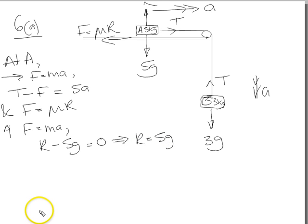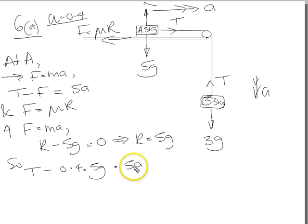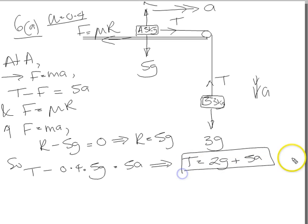Now we know mu from the question, the coefficient of friction, the value of mu is 0.4. So f equals mu r, and r is 5g. So t minus f, which is mu r, 0.4 times r which is 5g, is equal to 5a. So there's the tension then. 5 times 0.4 is 2, 2g plus 5a. So t equals 2g plus 5a. Label that as 1.